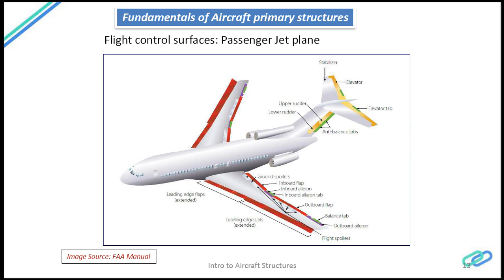Ailerons control the rolling motion and maneuverability of the aircraft. Also noticeable in the modern day aircraft are very small flat panel surfaces called tabs — balance tabs and anti-balance tabs on the rudder. The elevator also has a small rectangular panel surface called an elevator tab.